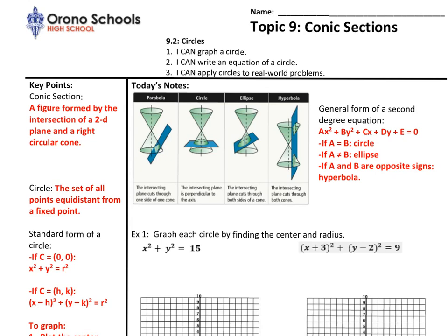The definition of a conic section is a figure formed by the intersection of a two-dimensional plane and a right circular cone. Parabolas are also an option of a conic section, but since we've spent quite a bit of time on parabolas, we're not going to work with them in this topic. We'll focus on the general form of a second degree equation: Ax² + By² + Cx + Dy + E = 0. Essentially, if A and B are equal, your equation identifies a circle. If A and B are not the same and it stays addition, it's an ellipse. If A and B are opposite signs, we will get a hyperbola.